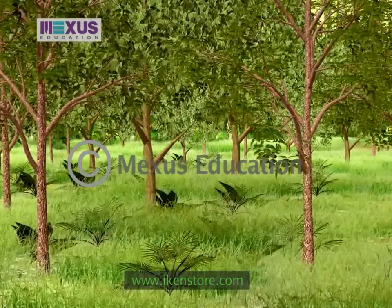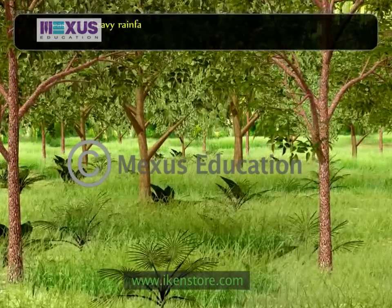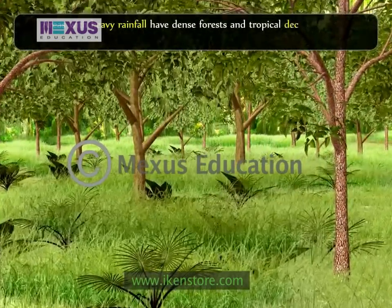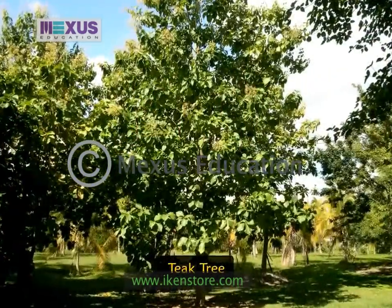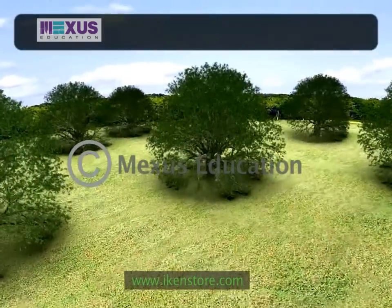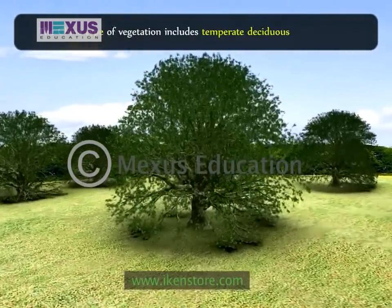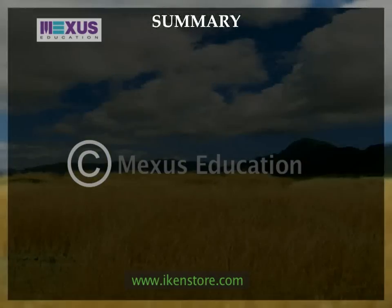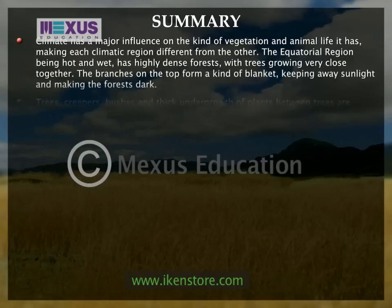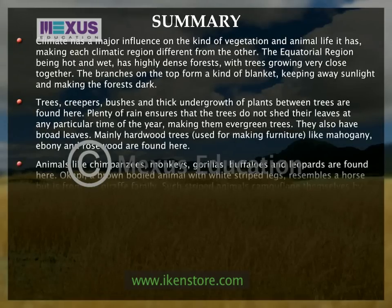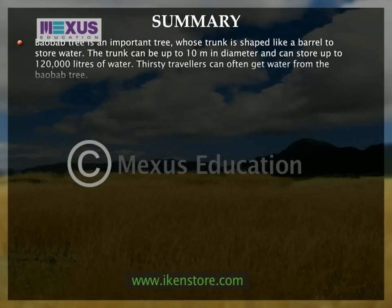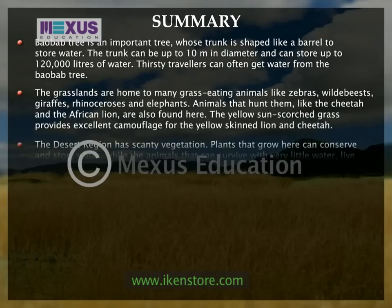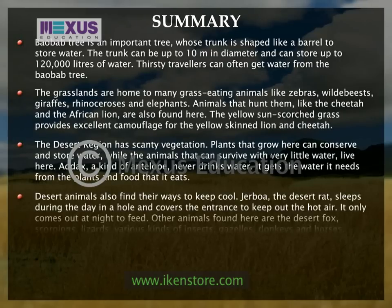The monsoon type of vegetation varies according to rainfall. Areas with heavy rainfall have dense forests and tropical deciduous trees grow here. They shed their leaves just before the dry season. Teak is an important tree of this region. The China type of vegetation includes temperate deciduous trees like oaks.